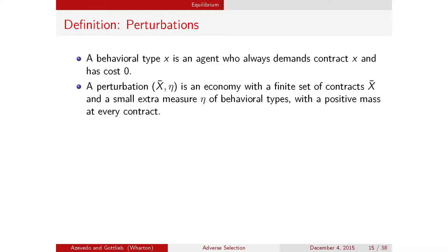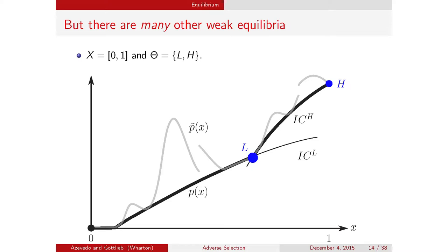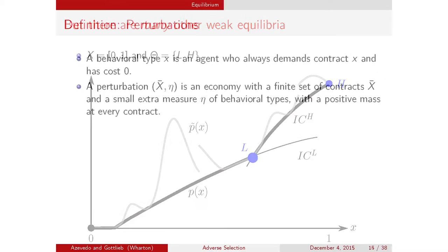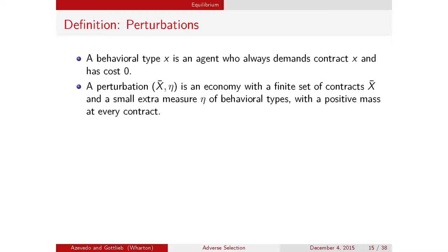We're going to find a refinement that picks a subset of these equilibria. The idea is that instead of having every possible contract from 0% to 100%, we pick a finite subset—say 100 contracts—and for every contract add a tiny measure of behavioral types who always purchase that contract and have a cost of zero. This means the cost of everything is well-defined in any perturbation. You can't have prices set way too high because if none of the standard types buy a contract, prices just become driven down. A perturbation is a choice of the finite set of contracts and the small measure of behavioral types.